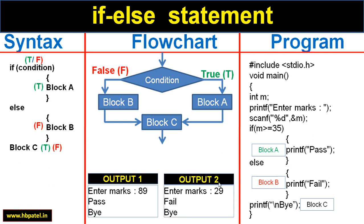If I run the program again and enter a value like 29, it will check: is 29 greater than or equal to 35? No, it is false. So it will skip block A, jump to the else part, execute block B, and then execute block C. So it will first print 'fail' and then on the next line print 'bye'.